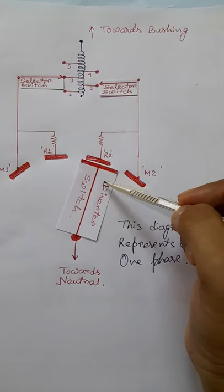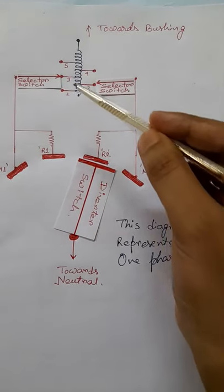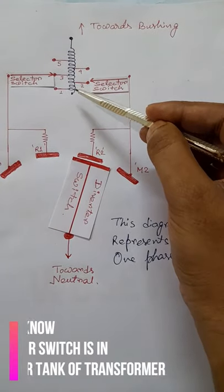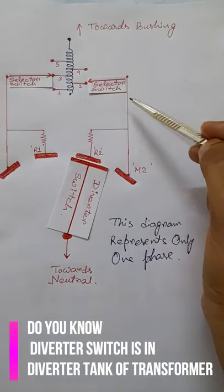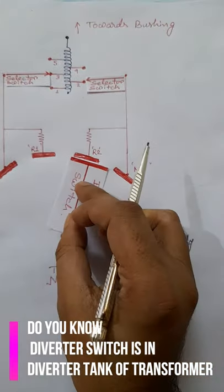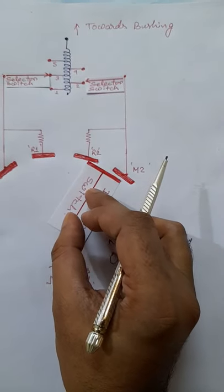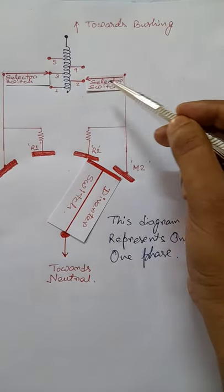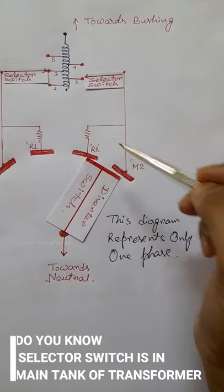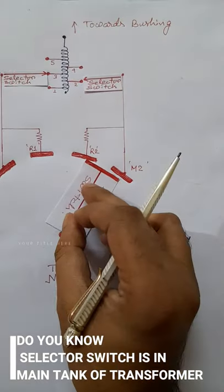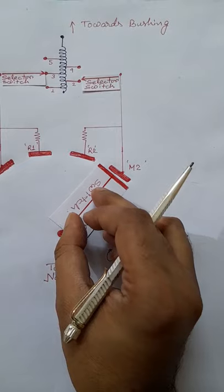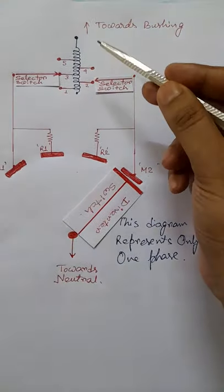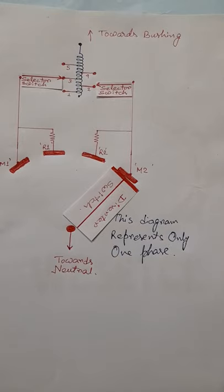The diverter switch keeps moving in the clockwise direction and at a point it is only connected with R2, so tap three is disconnected and total load current flows through tap two. Then it moves to a position where current flows through R2 and M2, and finally reaches the position where total load current is flowing through tap two.